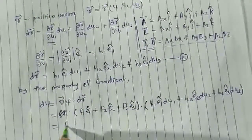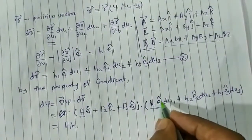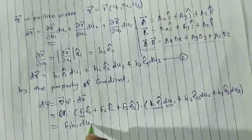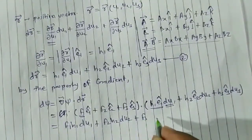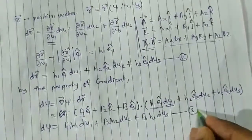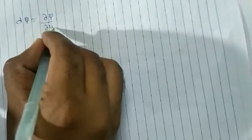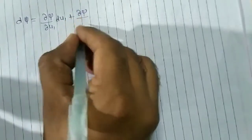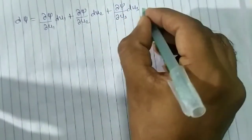Taking the dot product in our case, I get: dψ = f1·h1·du1 + f2·h2·du2 + f3·h3·du3. I will call this equation 3. Now, I also know that if I write dψ in terms of partial derivatives, it will be: dψ = (∂ψ/∂u1)du1 + (∂ψ/∂u2)du2 + (∂ψ/∂u3)du3. I will call this equation 4.